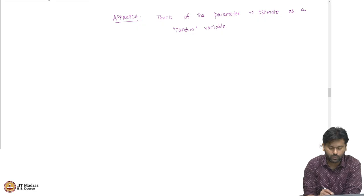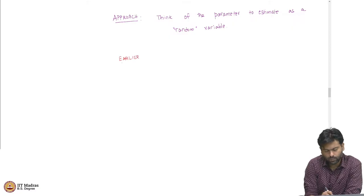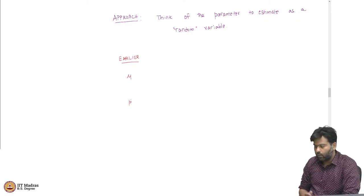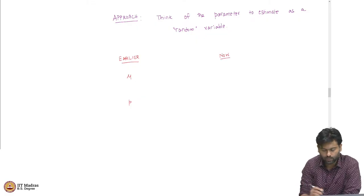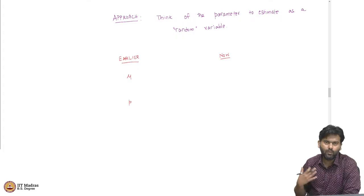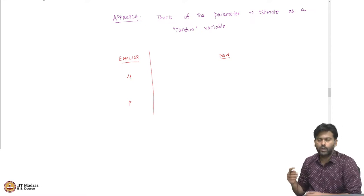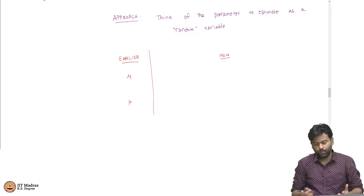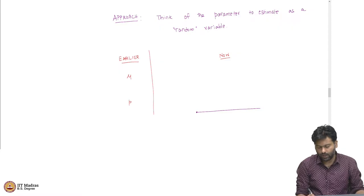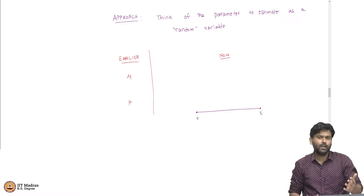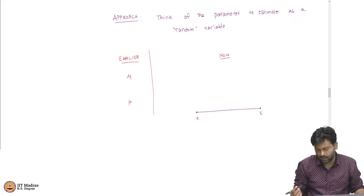Earlier we were thinking of the parameter as some mu or some p — something we are trying to estimate. Now, we are going to encode our hunch as a distribution over this underlying parameter. If somebody says the true value of p is somewhere close to 0.9, I might put a hunch like this — a distribution that peaks near 0.9. This tells us that before seeing the data, I believe my true value of p is most likely around 0.9 or closer to 1. Depending on our hunch, we can modify this.